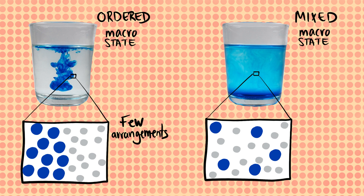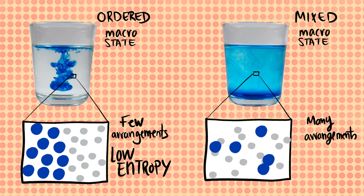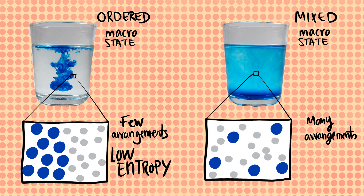However, we cannot swap a pigment with a water molecule without making the system more mixed. So in the ordered state, there are relatively few rearrangements of the particles that can keep the large-scale order. As entropy measures the number of such possible rearrangements, ordered states have low entropy. In the mixed state, however, there are many more ways to rearrange the particles without destroying the macroscopic state, so the entropy of the mixed state is higher than that of the ordered state.